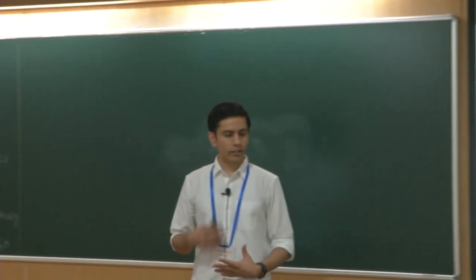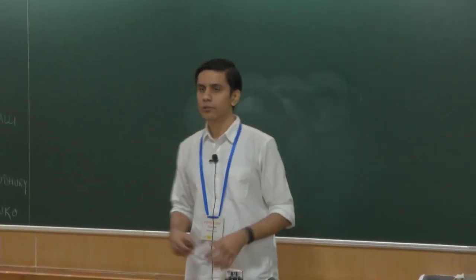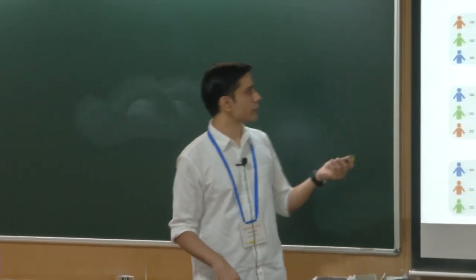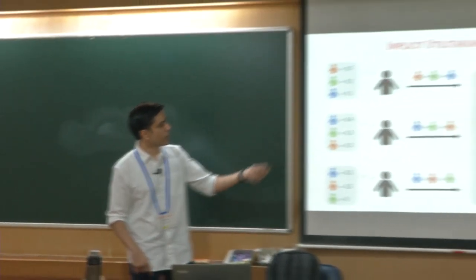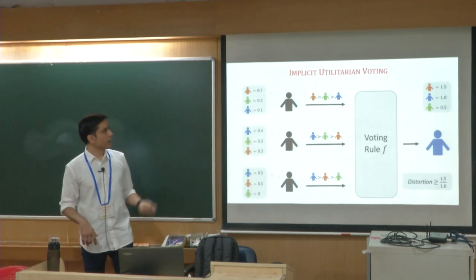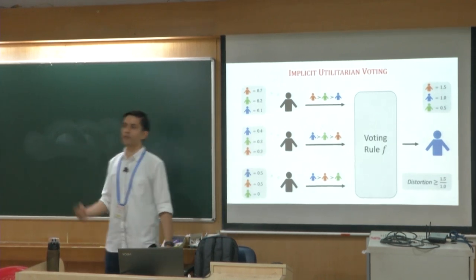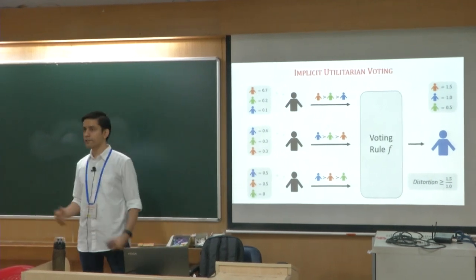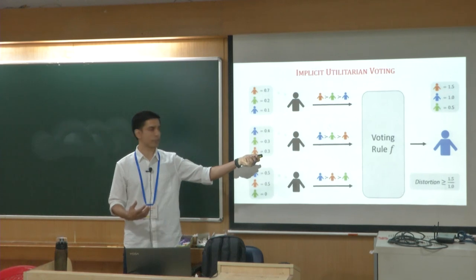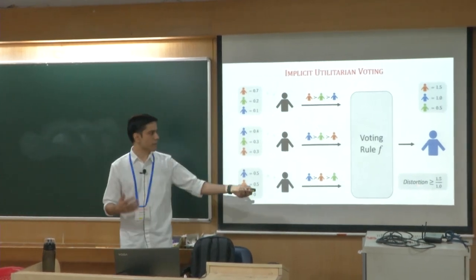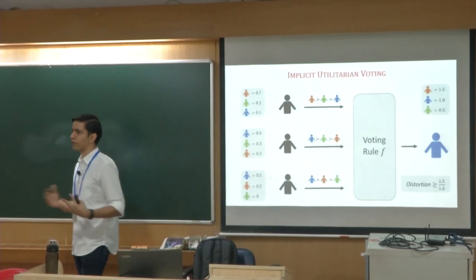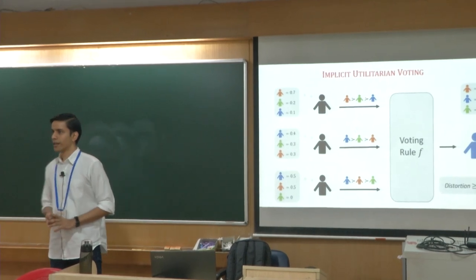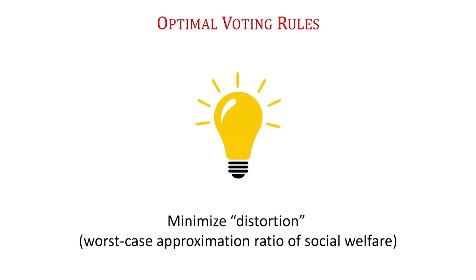This approach requires a few subjective assumptions: that voters have numerical utilities, that you want to maximize some objective like social welfare, and that you seek the best worst-case approximation ratio. But once you make these three assumptions, the nice thing is that it gives a single uniquely optimal voting rule — the one that minimizes distortion on every possible rank preference profile.